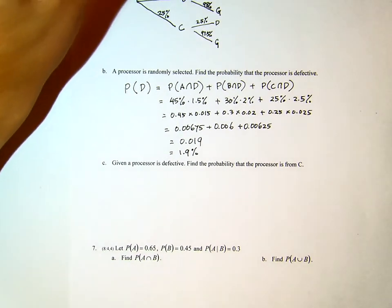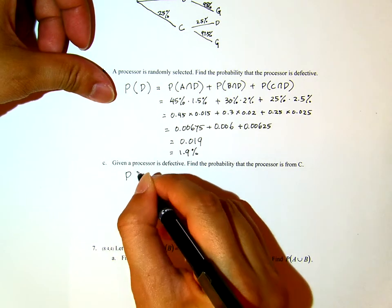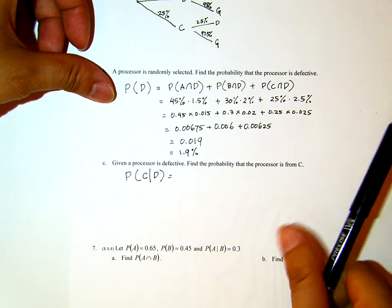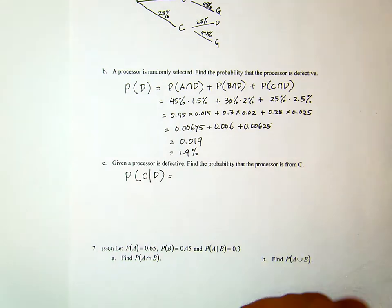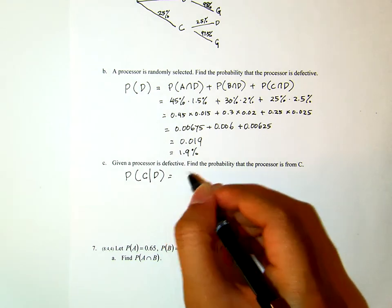Part C. Given the processor is defective, find the probability that the processor is from C. Find the probability that the processor is from company C given that it is defective. That's actually usually the challenge. In the real company, suppose that you find some processor is defective. Which company you will call first to ask for return or refund or something? Okay? And this is how we make that decision.